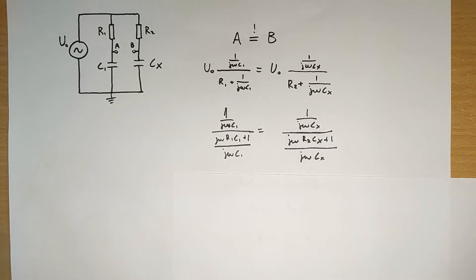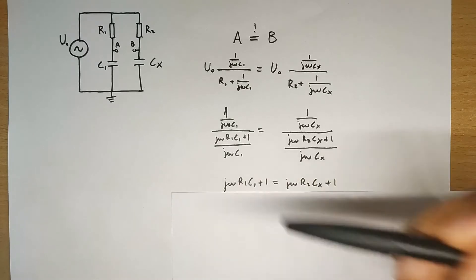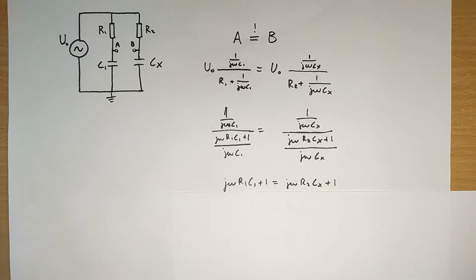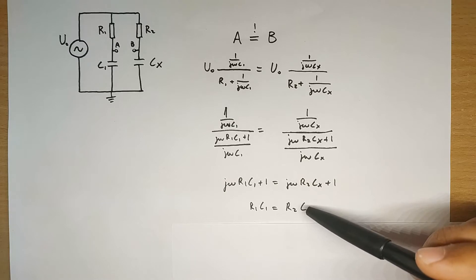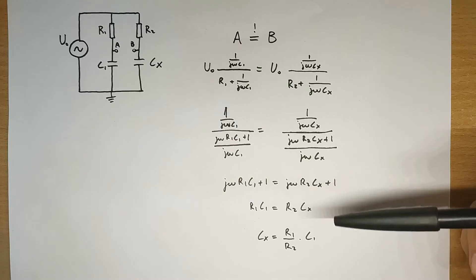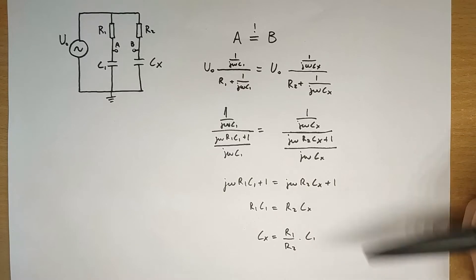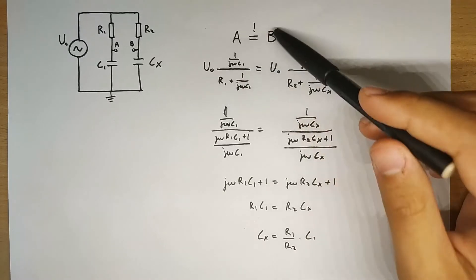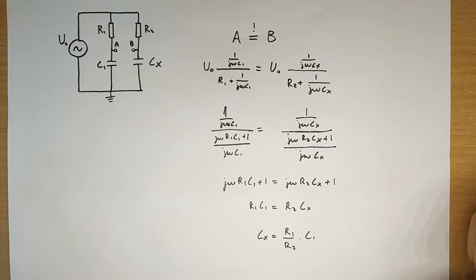So these terms cancel out with each other here and there, so we get this, and then we can subtract one and then divide by jω on both sides. And so then at this point we can just turn things around for C, and this is the final result. Now this means that by changing the values of R₁ and R₂, we can make it so that A and B are the same, and then knowing these three values we can find the value of our unknown capacitor here.